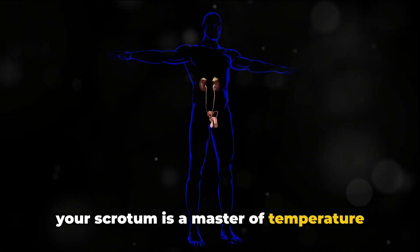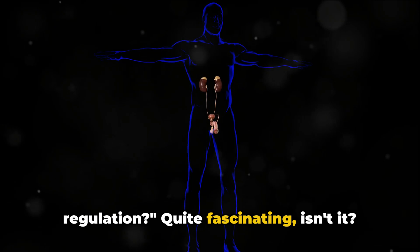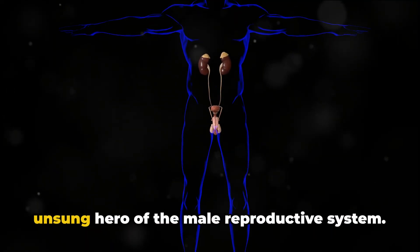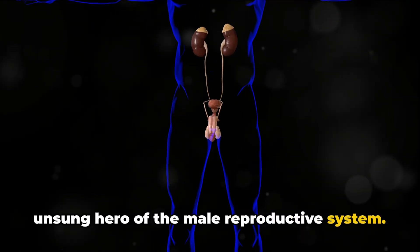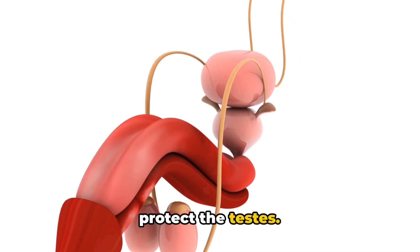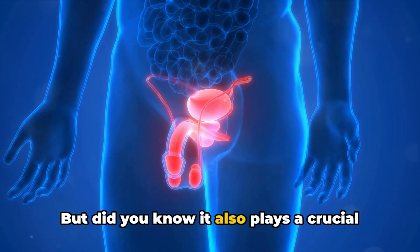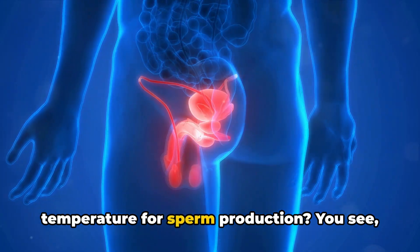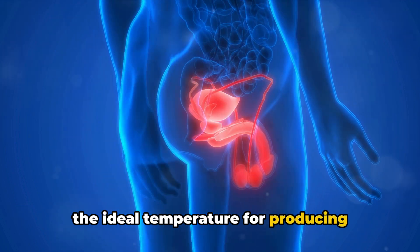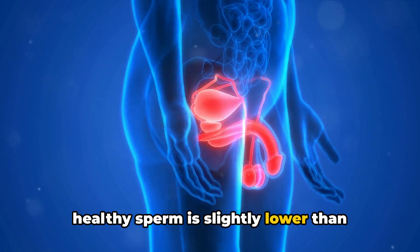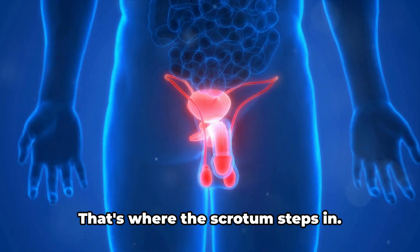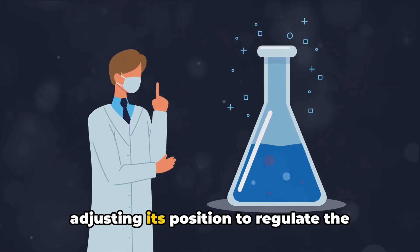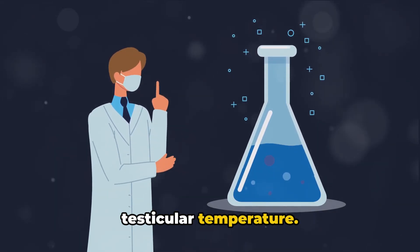Coming in at number two, did you know your scrotum is a master of temperature regulation? Quite fascinating, isn't it? The scrotum, often underestimated, is the unsung hero of the male reproductive system. Its primary function is to house and protect the testes. But did you know it also plays a crucial role in maintaining the perfect temperature for sperm production? You see, the ideal temperature for producing healthy sperm is slightly lower than normal body temperature. That's where the scrotum steps in. It acts like a natural thermostat, adjusting its position to regulate the testicular temperature.